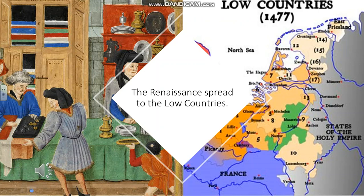The Renaissance wasn't confined just to Italy — it spread north, something called the Northern Renaissance. One of the reasons behind that was that the low countries, modern day Belgium and Holland, were very prosperous. They made their money from producing cloth and selling it, and that led to disposable income, which again was displayed in things like portraits, improved architecture, and so on.